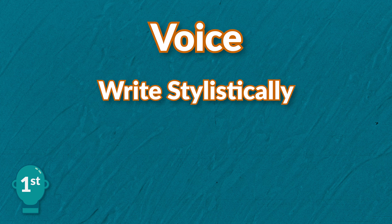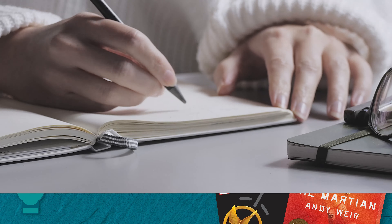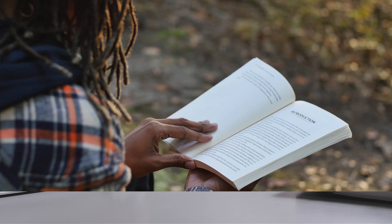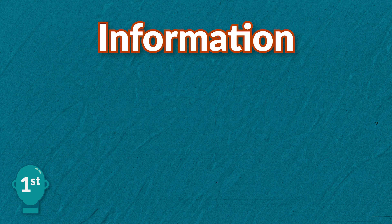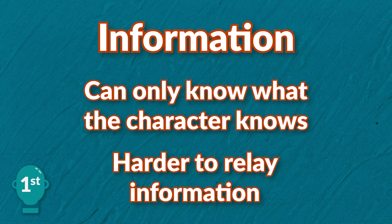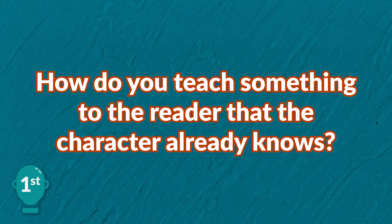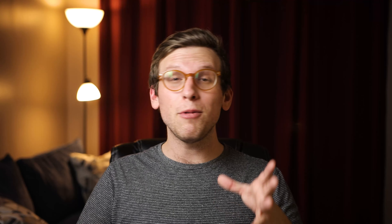First person gives you the leeway to write more stylistically since you use the character's voice, which is why you see it so much in modern fiction. Writing in a distinct voice can be fun for the author and reader. But that level of intimacy has its drawbacks, like how this POV handles information. Since you are being told the story by the main character, you generally can't know anything they don't. That makes it harder to communicate important information about the world. How do you teach something to the reader that the character already knows without info dumping? You'll have to contrive situations to include important world details, which directly affects your plotting.